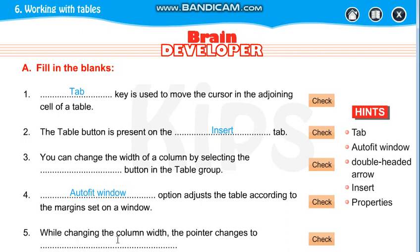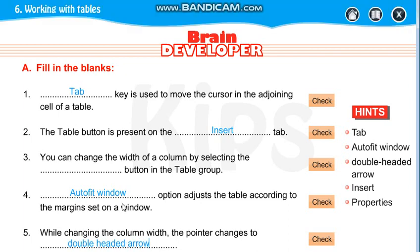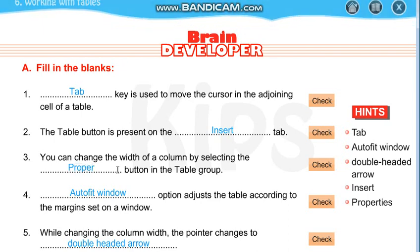While changing the column width, the pointer changes to a double headed arrow. Now, which button? That is your Properties button.